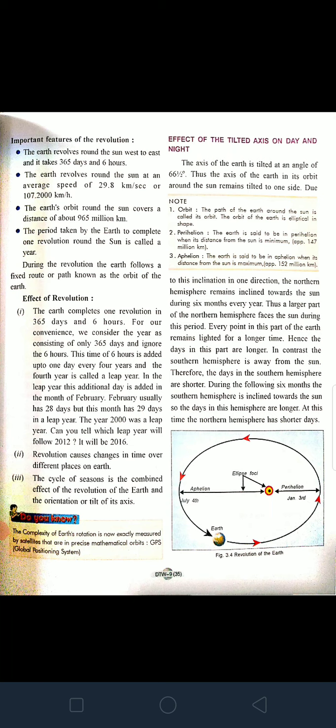The features of revolution: as you all know, revolution is the movement of the earth around the Sun in an elliptical orbit. It takes around 365 days and six hours to complete one revolution. It moves from west to east, and the earth revolves around the Sun at an average speed of 29.8 km per second.